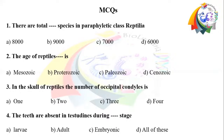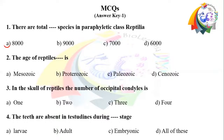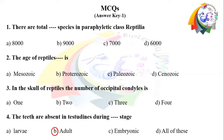Let's verify our answers. Question 1: right option A — there are total 8,000 species in paraphyletic class Reptilia. Question 2: right option A — Mesozoic era is called the age of reptiles. Question 3: the skull of reptiles has 2 occipital condyles, option B. Question 4: right option B — teeth are absent in sinusoids during the adult stage.